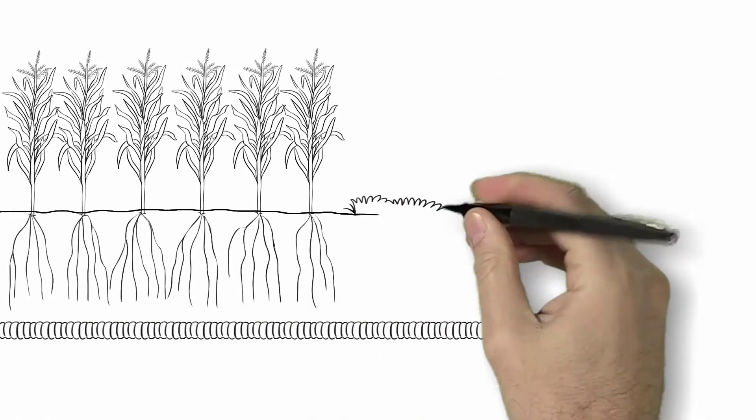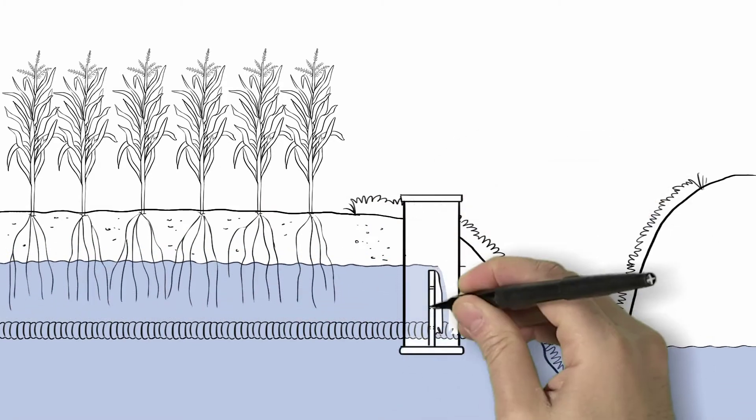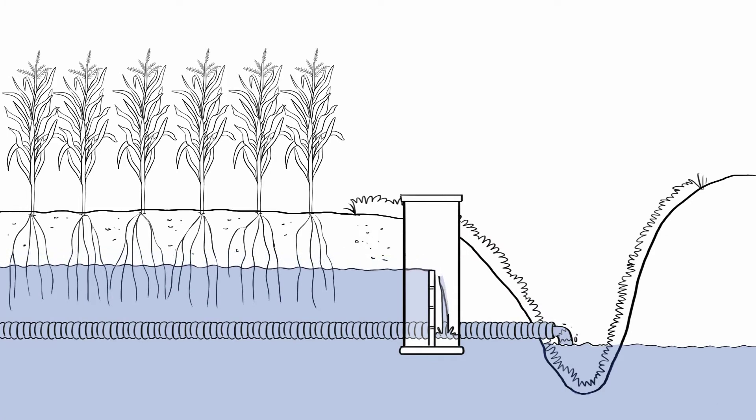But how could he store the water? He knows that the soil already stores a lot of water, but what if it stored more? Instead of draining it all, he could stop drainage after his fields had been planted and spring work completed, leaving more water for his crops in the soil during summer months.